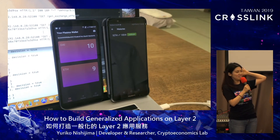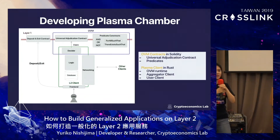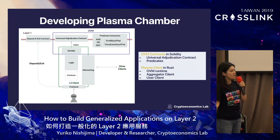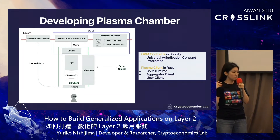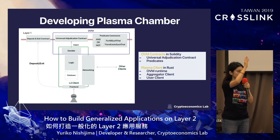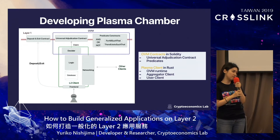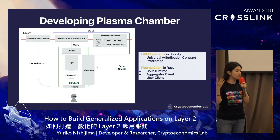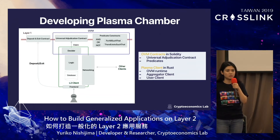To create these applications, we had to develop the framework itself. We implemented the Plasma client in Rust, including the OVM runtime, the aggregator client shown in the terminal, and two user clients. We also wrote the universal adjudication contract in Solidity, along with the basic predicates that can combine all the different kinds of predicates.